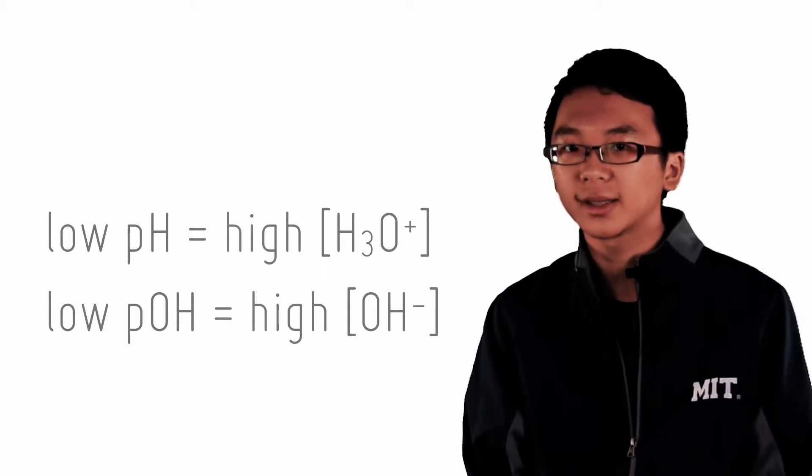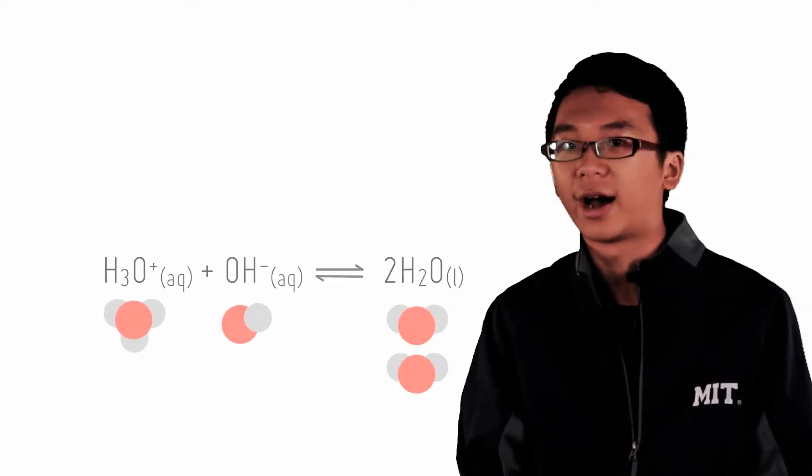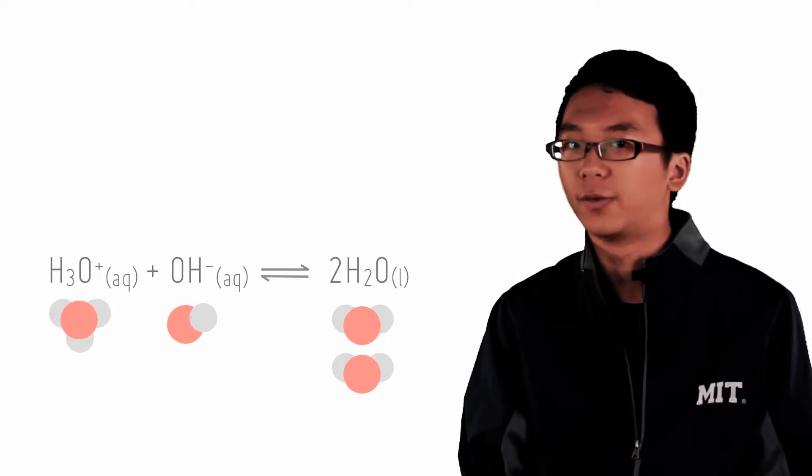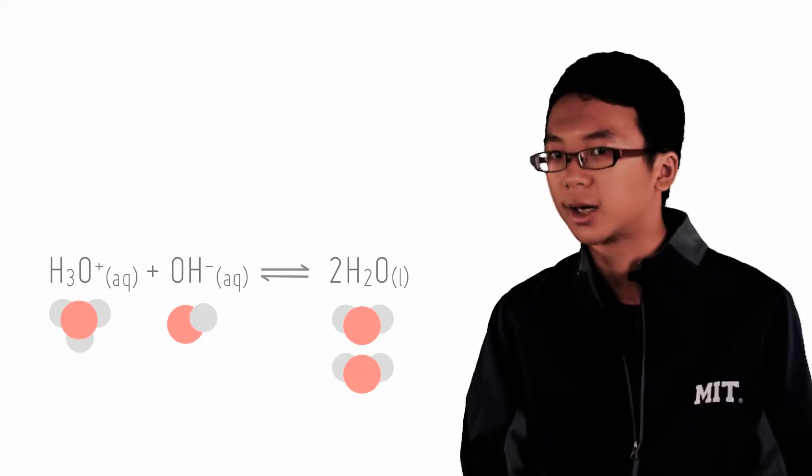Because of the simple reason that hydronium reacts with hydroxide to give you water. So pH and pOH can't be both low at the same time because if it was, it would form more water.